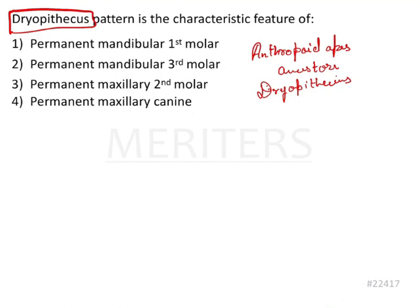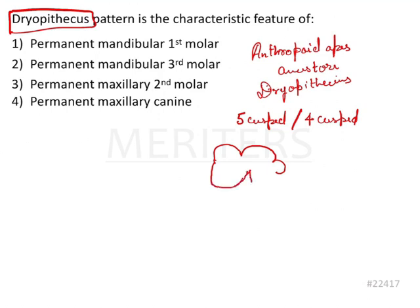What kind of morphology is this? When we look at the mandibular first molars, there can either be 5 cusps or 4 cusps in the Dryopithecus pattern. We have the distal cusp, the buccal cusp, the mesiolingual cusp, the distolingual cusp, and the distobuccal cusp.